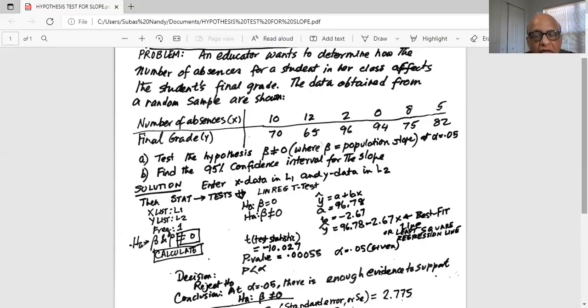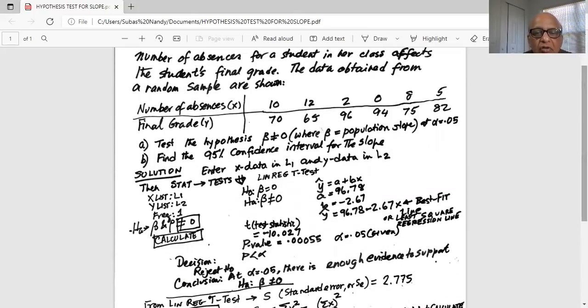And what is the alpha value? 0.05. That's already given to us. That is the level of significance. So p is less than alpha. And so our decision is reject H0. And our conclusion is that at alpha equal to 0.05, there is enough evidence to support the alternate that beta not equal to 0. Population slope is not equal to 0.